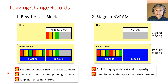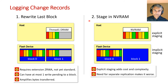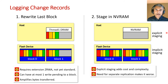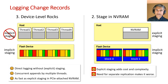Even with ZRWA, there can be at most one write pending to any given block, because otherwise the device might reorder the writes and lose some records. The second technique is to stage the writes in NVRAM. Note that this staging is explicitly directed by the host and is on top of any implicit staging within the SSD, so it adds some cost and complexity to the host. With device-level rocks, the host can append log records directly to the SSD without staging them in NVRAM.